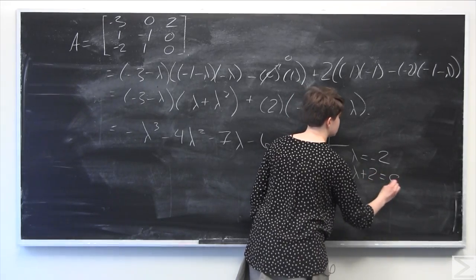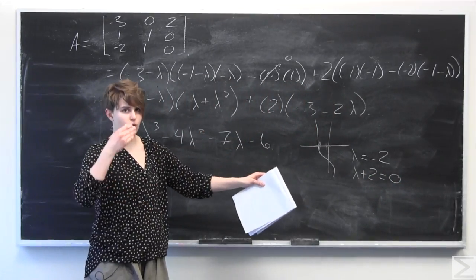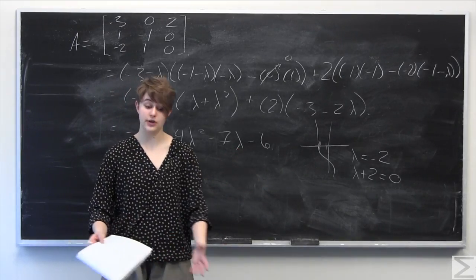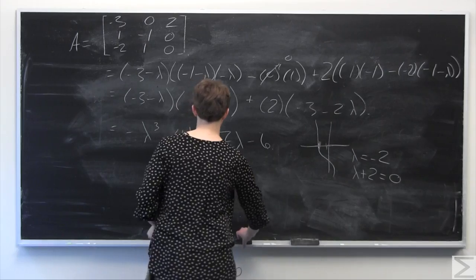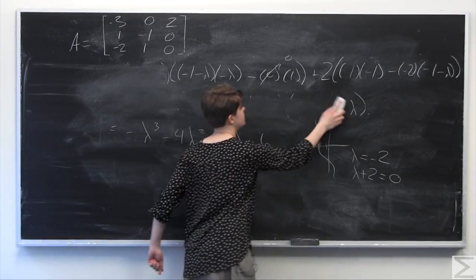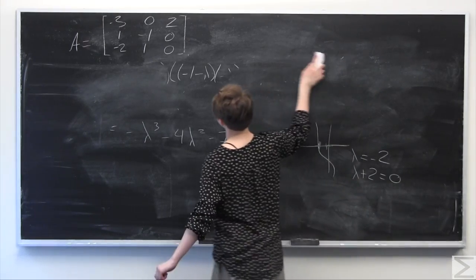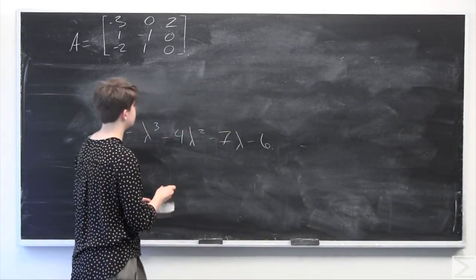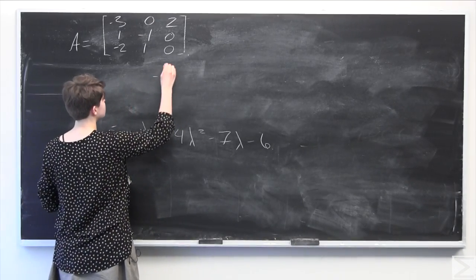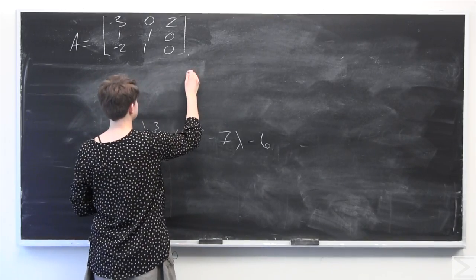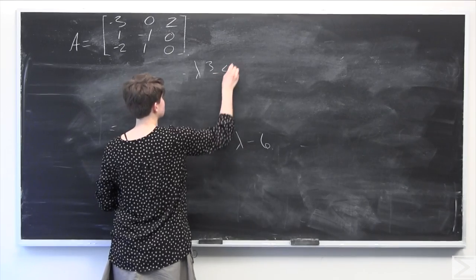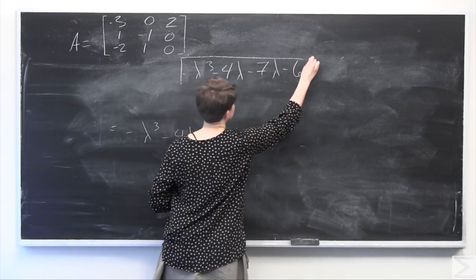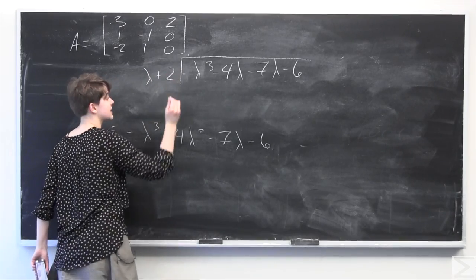Since lambda equals negative 2 is a root, we add 2 to both sides to get lambda plus 2 equals 0. Now we'll factor out lambda plus 2 using polynomial long division, with lambda as our variable. We set up the division: negative lambda cubed minus 4 lambda squared minus 7 lambda minus 6, all divided by lambda plus 2.